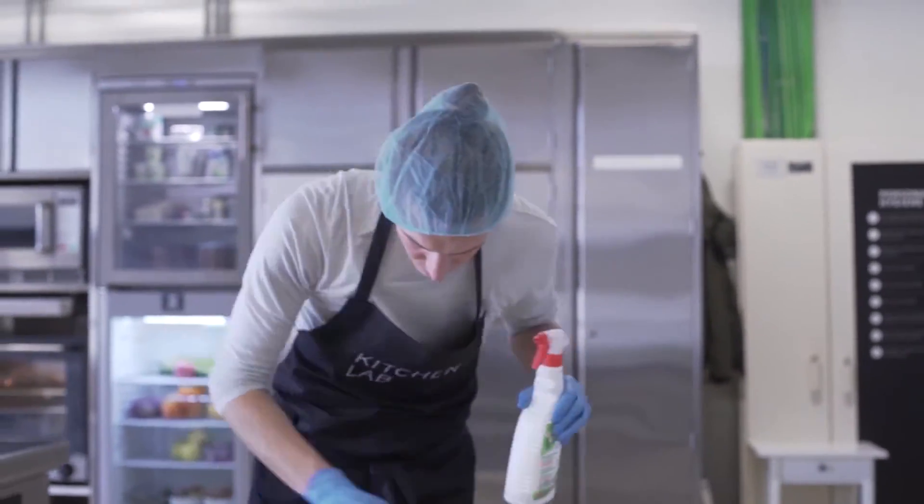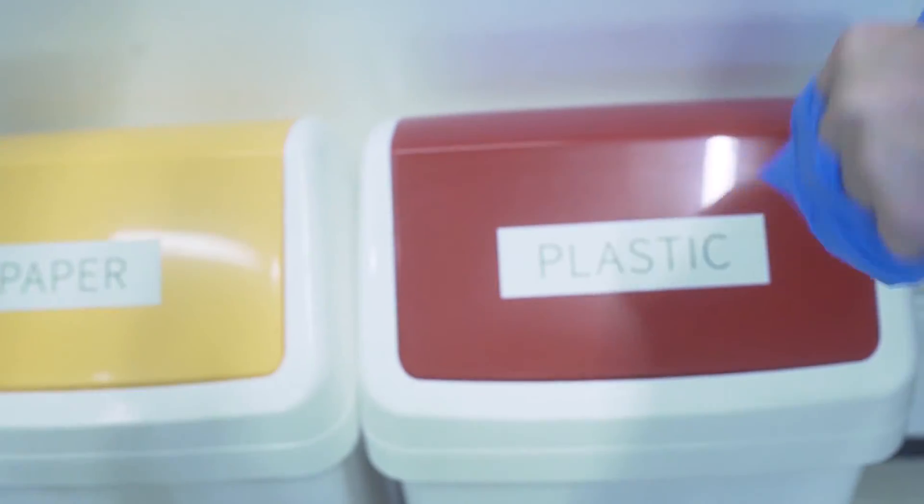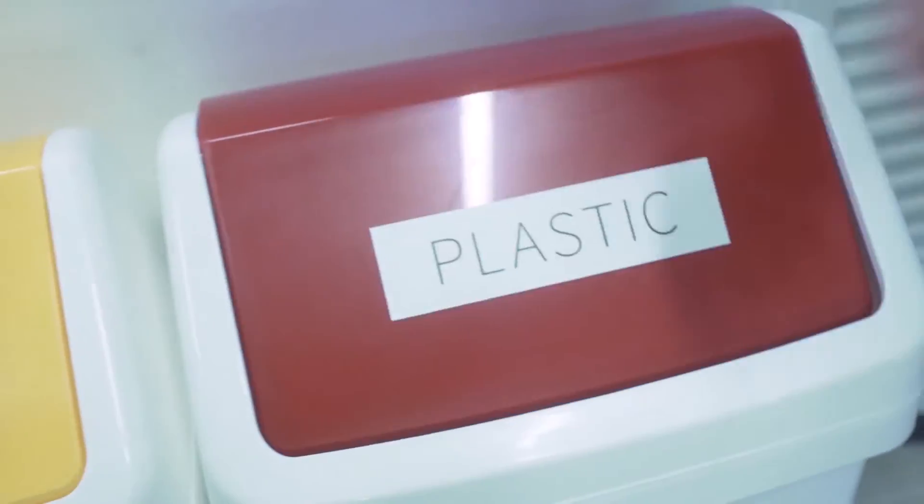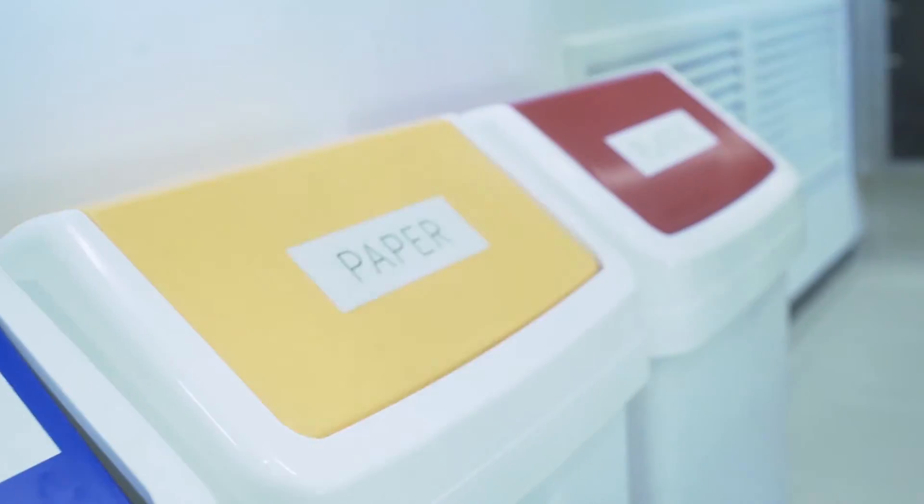Thoroughly clean all the surfaces you've been working on. Wash up all the utensils you have used by hand or in the dishwasher. Separate your waste and dispose of it in the provided bins. Put your aprons and washing up cloths in the designated receptacles.